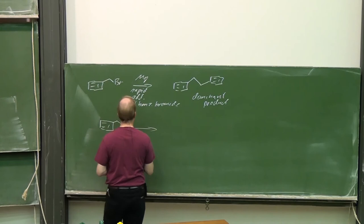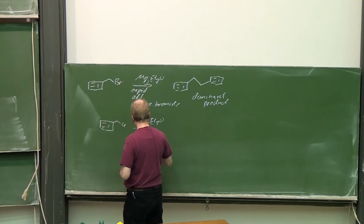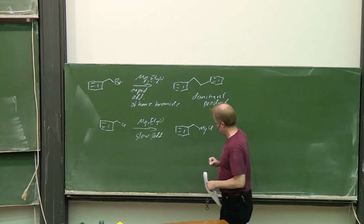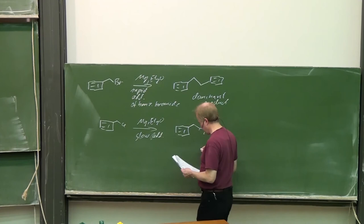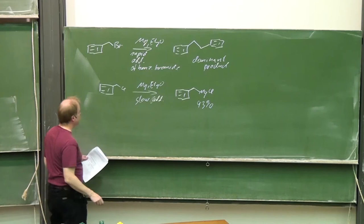With less reactive chloride, once again magnesium in diethyl ether and slow addition, we can get to that benzyl magnesium chloride in a very good 93% yield.